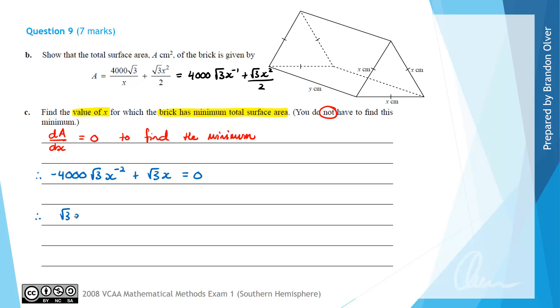That will give us root 3x equals 4000 root 3 over x squared. Multiplying both sides by x squared, we find that root 3x cubed equals 4000 times root 3. We can divide both sides by the square root of 3, which will give us x cubed equals 4000. Therefore x equals the cube root of 4000. We can simplify that down to be x equals 10 times the cube root of 4. This is the value of x that will minimize the surface area of the brick, but still have a volume of 1000 cubic centimeters.